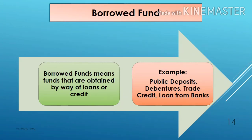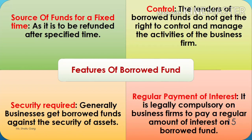Next is borrowed fund — funds that are obtained by way of loans or credit. For example, public deposits, debentures, trade credit, and loan from banks. Features of borrowed fund: it is the source of funds for a limited, fixed time as it is to be refunded after the specified time. Security is required to obtain finance by way of loans. The lenders of borrowed funds are not the owners, so they don't get the right to control and manage the activities of the business firm. In case of borrowed fund, it is legally compulsory for the business firm to pay a regular amount of interest.